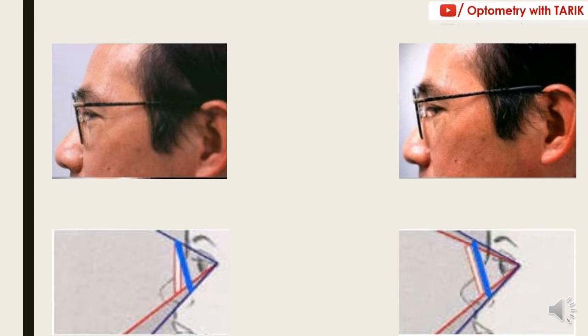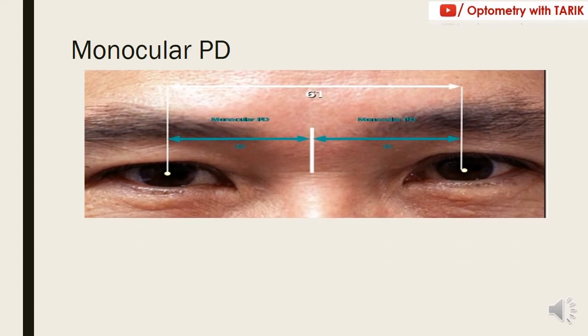Monocular PD remains one of the most important points in dispensing a progressive lens. If the monocular PD is not taken properly, the eye might see through the area where unwanted peripheral astigmatism is present, leading to blurry or improper vision. Since the right and left eye PDs may differ slightly, the placement of your progressive lens must correspond to each eye's monocular PD separately, as it has a different field of view for both eyes.